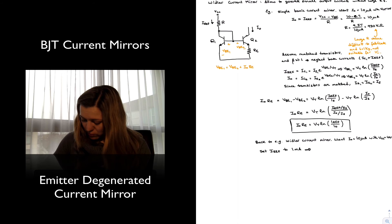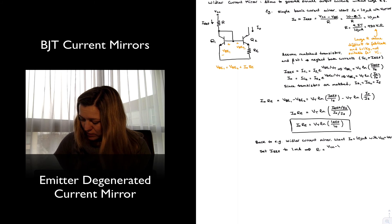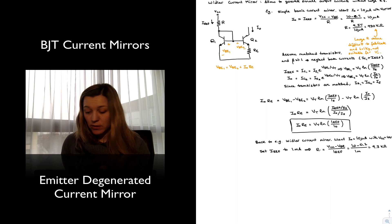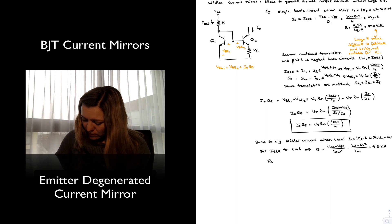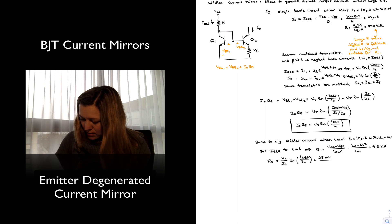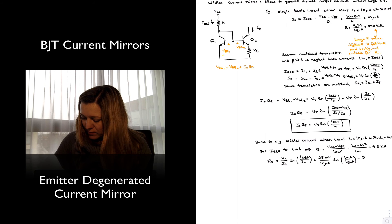Let's take a look at the value of resistor R. That will be R equal to the voltage across the resistor, VCC minus VBE, divided by my reference current. And so this will be 10 minus 0.7 divided by 1 milliamp, which is now 9.3 kilo ohms — 100 times smaller than the previous resistor. And yet I'm going to be able to program my output current. I'll calculate my RE value needed to program my output current to 10 microamps: it's going to be VT over I_out times the natural log of I_ref over I_out. VT is the thermal voltage, so 25 millivolts divided by 10 microamps, times the natural log of 1 milliamp divided by 10 microamps. And that gives me 5 kilo ohms for my resistor.